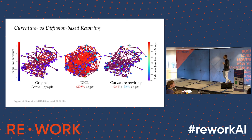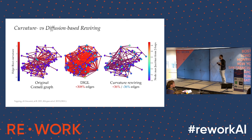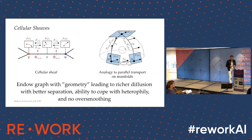This is especially important in heterophilic graphs — where neighbors are dissimilar from each other — which is very typical in social networks, where our friends may be similar in some ways but very dissimilar in others.